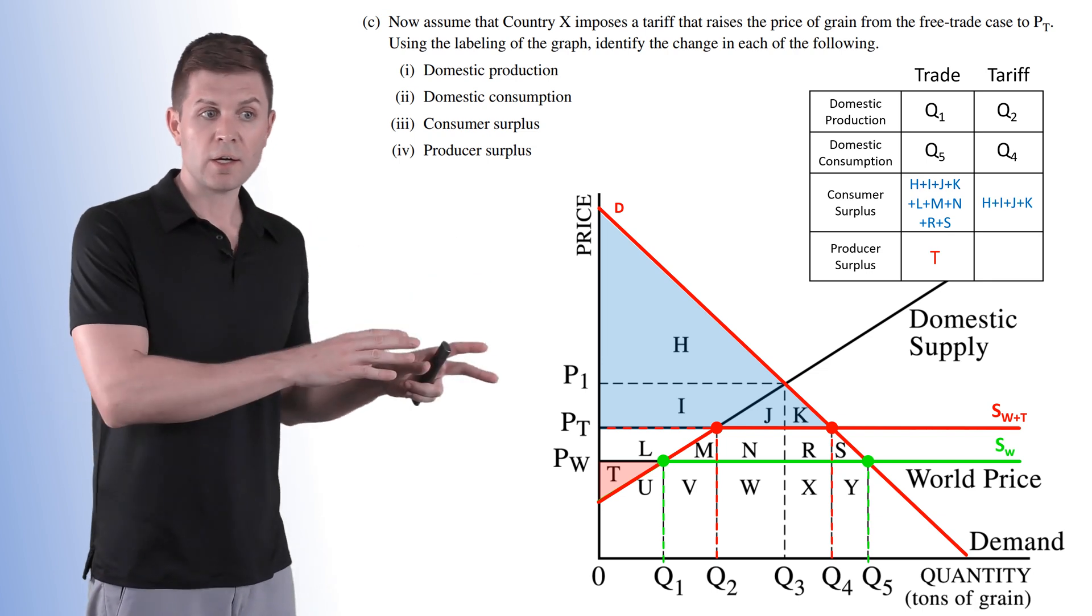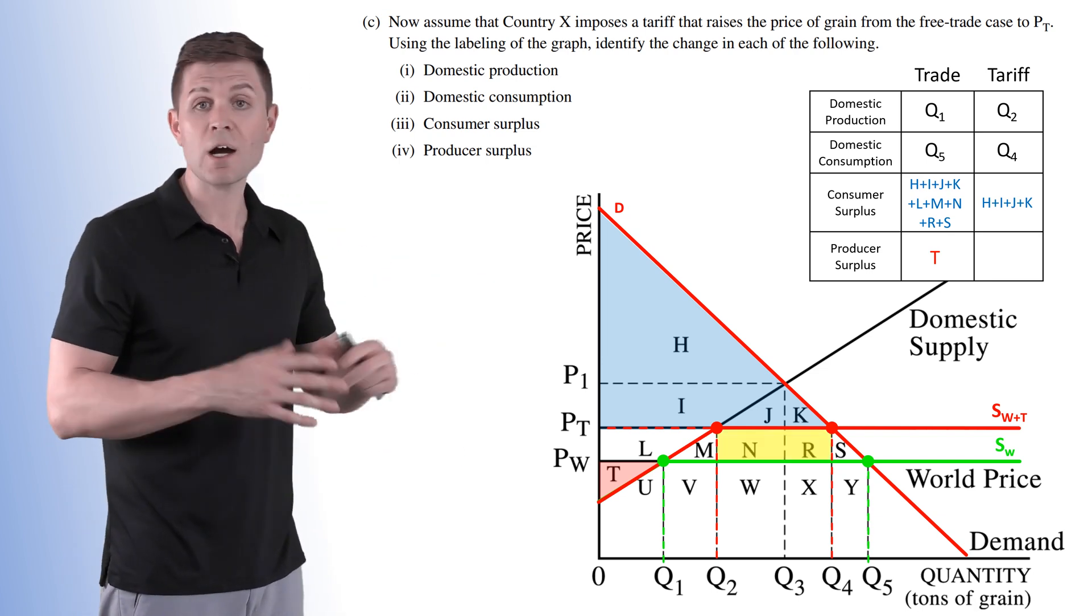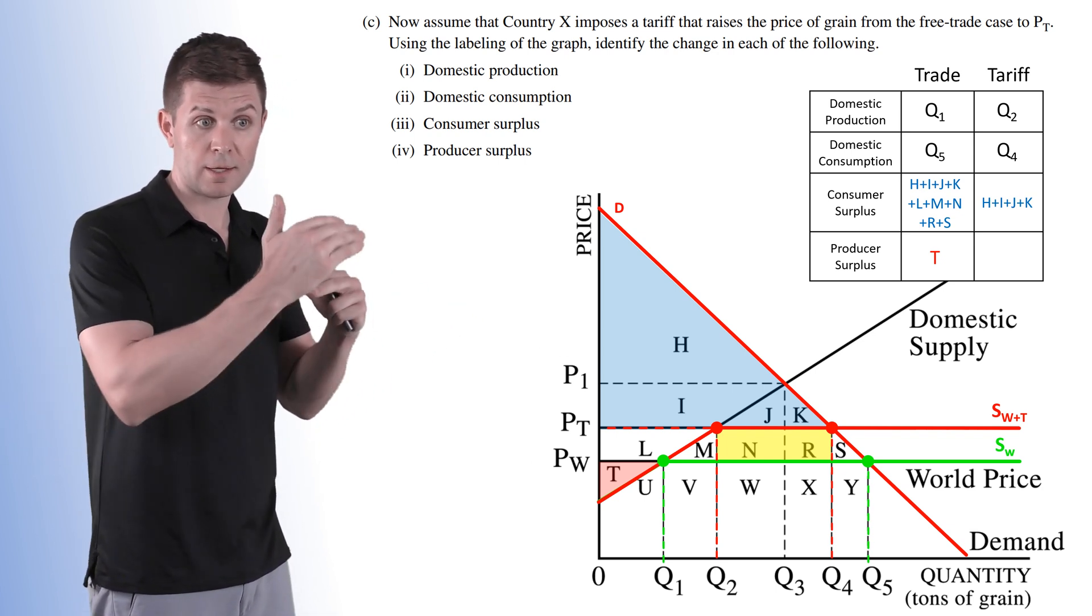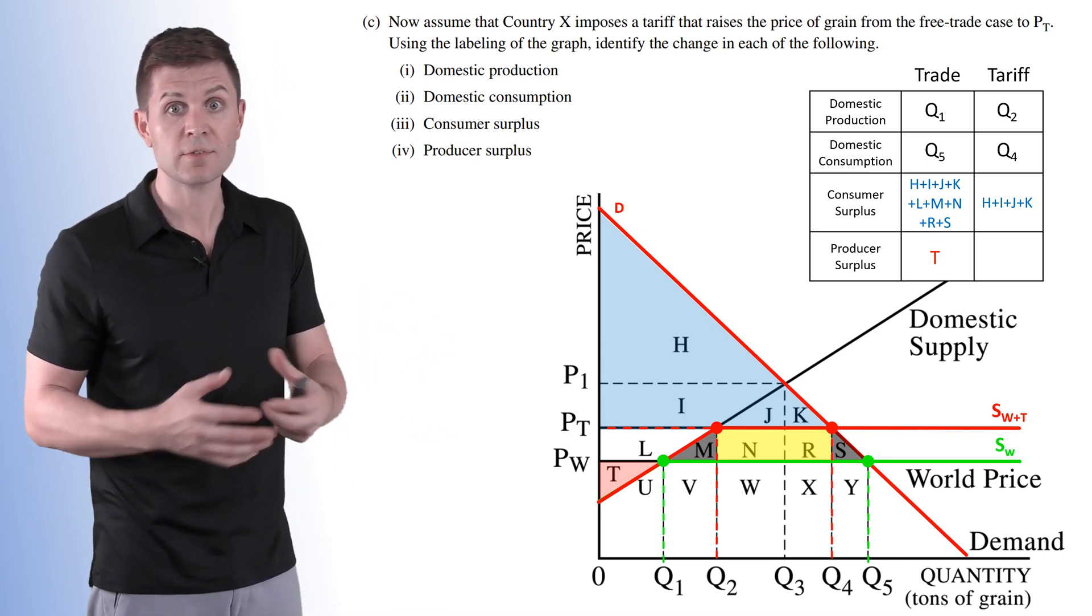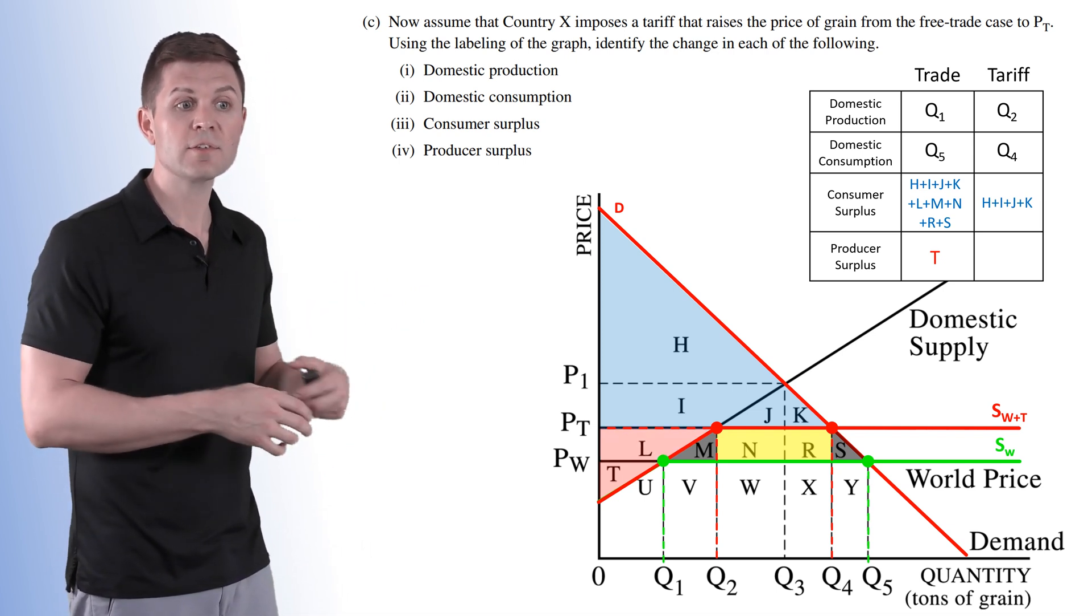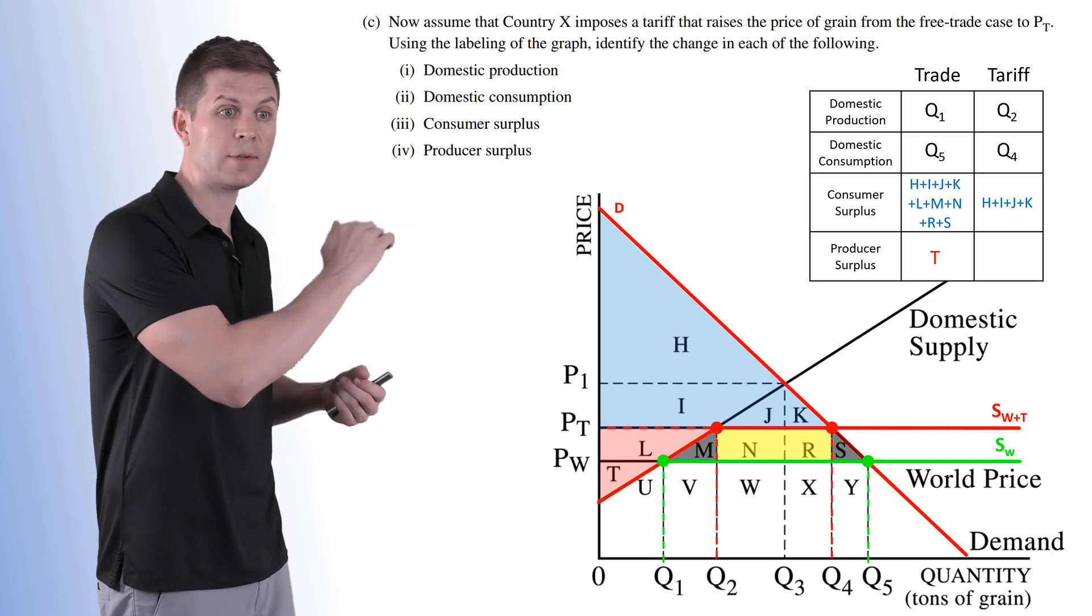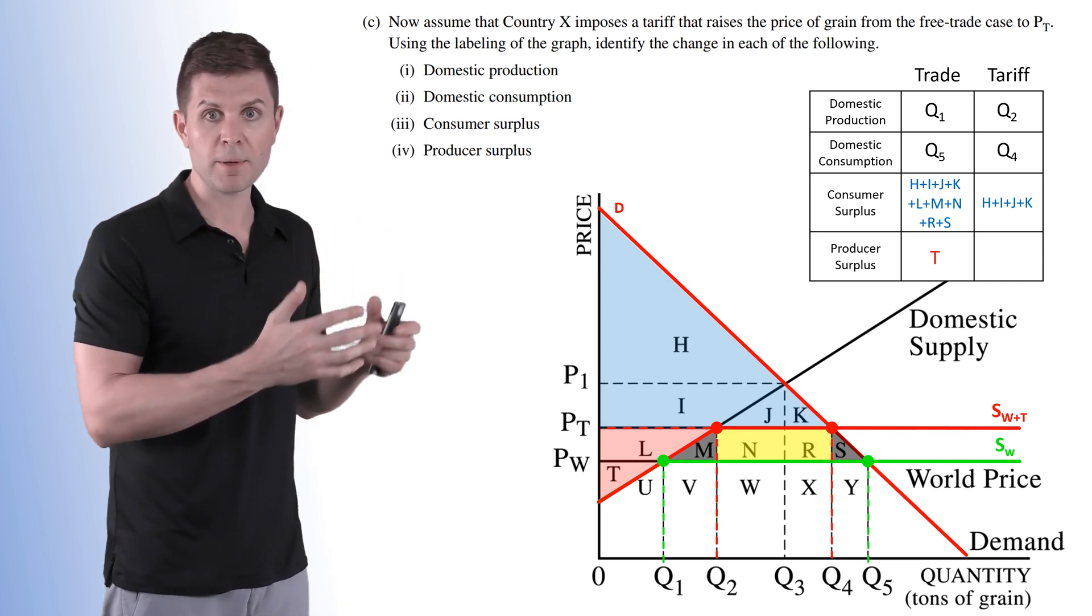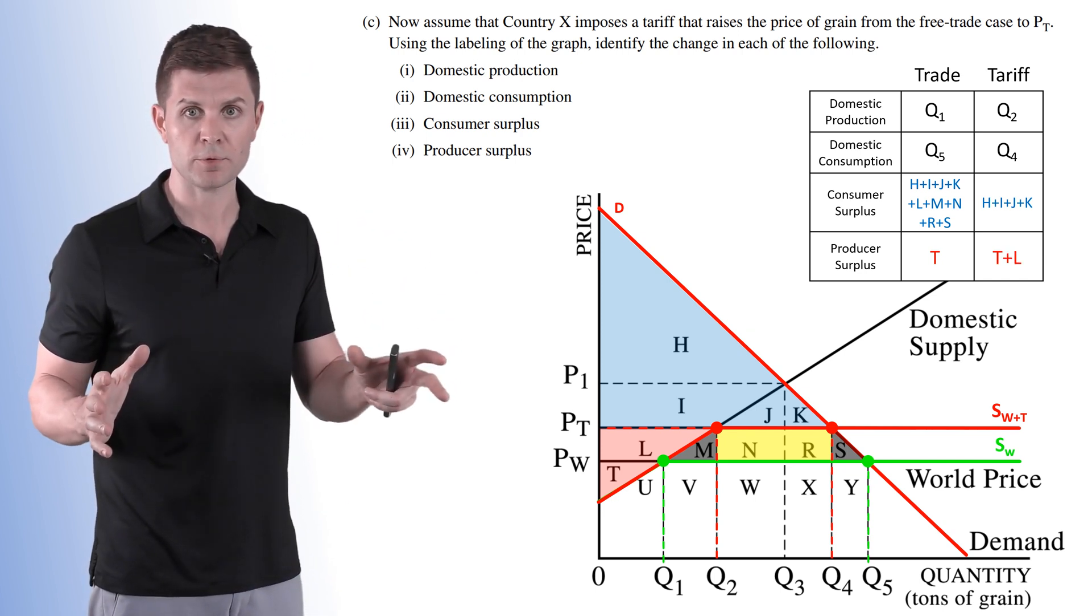Now we're going to take care of producer surplus in just a second, but I want to identify these other areas. N and R, this is going to be our tax revenue. The amount imported times the amount of the tariff right there. M and S, this is our deadweight loss. It's the surplus lost to that tariff. Now L, this is our new addition on to producer surplus. Because price went up a little bit and we have marginal sellers joining the market again, we have a little bit more producer surplus right there. So L, T and L represent all of our producer surplus.